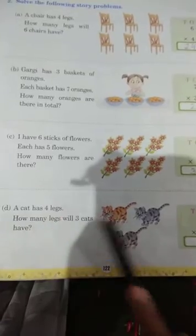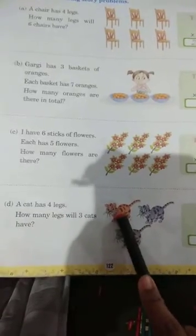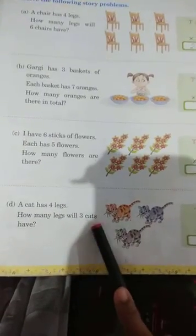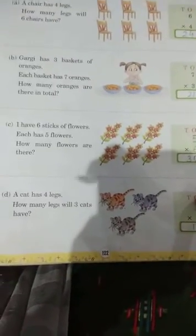A cat has four legs. Eek billi ka char pound hai. How many legs will three cats have? Toh, three billi ka kitna ho ga? Four into three, ya, three into four. Kar sakte ho? Four, three is twelve.